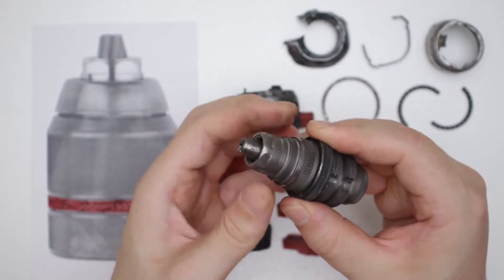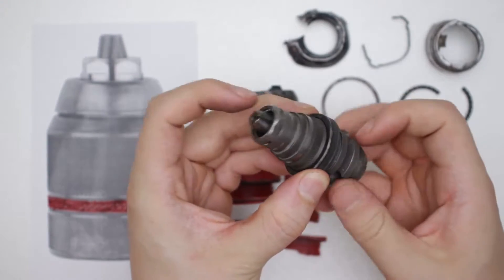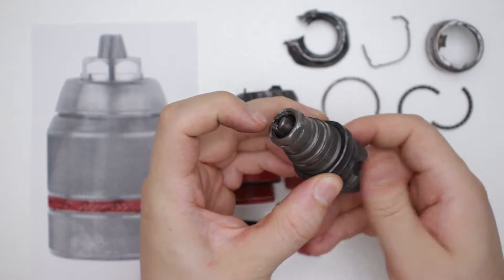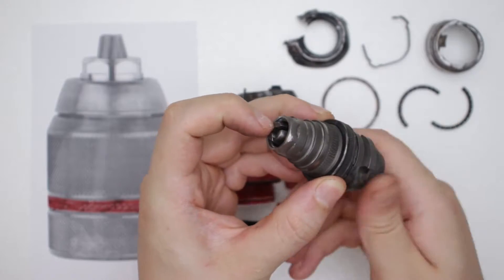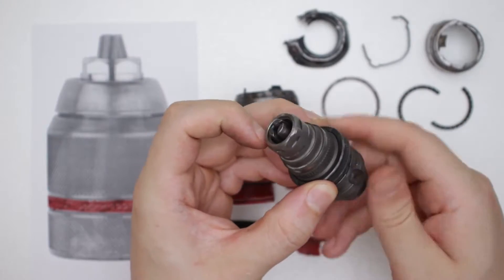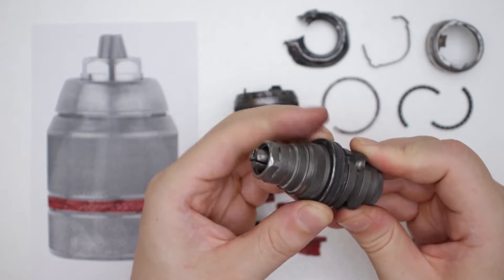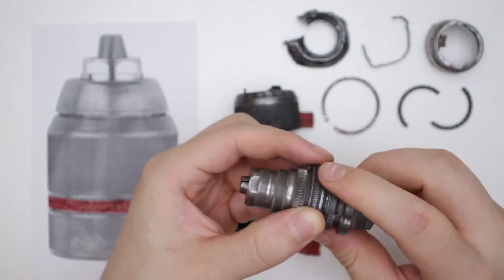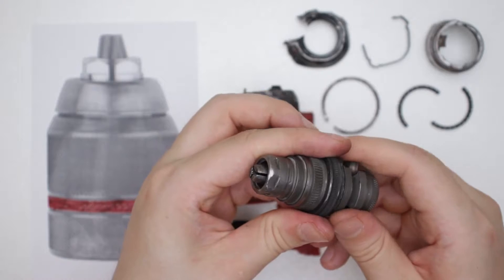And if we now turn the center part, we see the jaws moving in and back out. So this is how it generally works, at least if it doesn't get stuck somewhere.